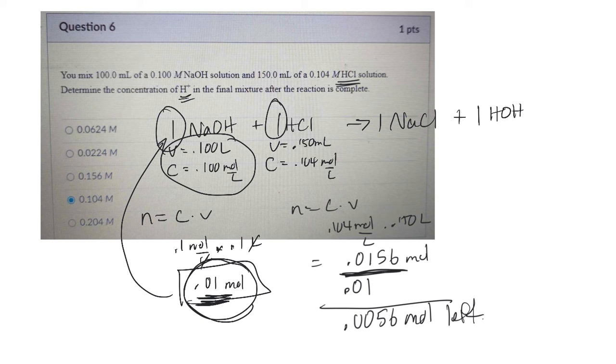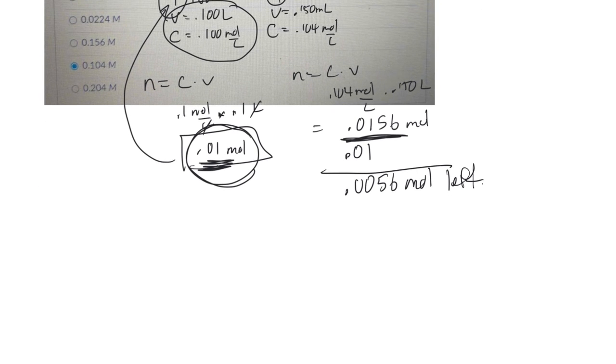Now, to find the concentration of that, you would take this as moles, so concentration is moles over volume. Moles is 0.0056 moles. And the volume now will be the total volume that's there, because you dump them both together. So it would be 250 milliliters, or 0.250 liters.